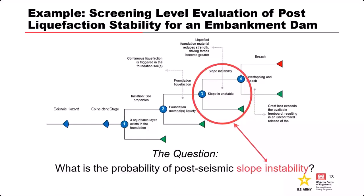So how do we utilize this in a risk assessment? In the exercise we had at lunch, we built a couple of event trees. This is what an event tree for liquefaction of an embankment might look like: the liquefiable layer exists in the foundation; foundation materials liquefy given an earthquake occurring with some coincident reservoir stage; the slope becomes unstable; the crest lowers; you have overtopping. We need to do some sort of stability analysis to help determine what the likelihood of the slope becoming unstable is.